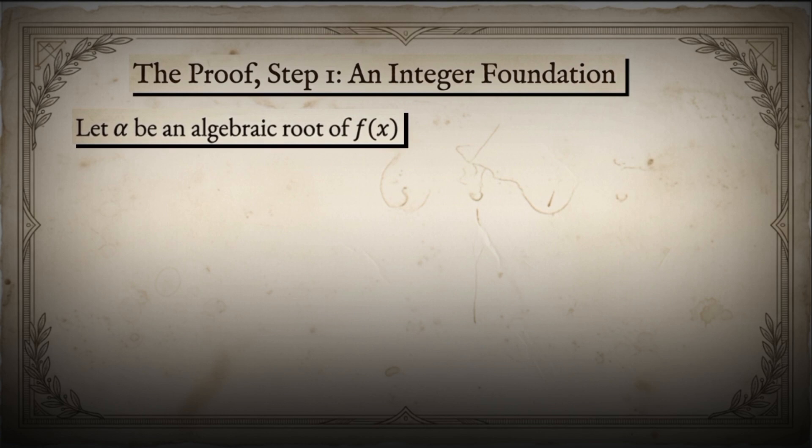Let alpha be an algebraic number of degree n. This means it's a root of an nth degree polynomial. Let beta equal p over q, a rational number close to alpha, where p and q are integers, with q greater than 0. Our goal? Prove that the absolute value of alpha minus p over q has a lower bound that depends on q.